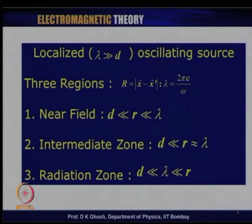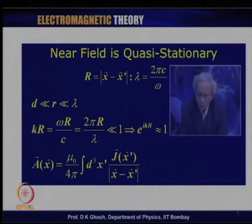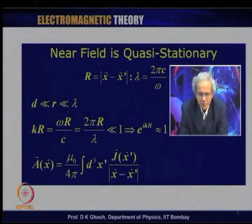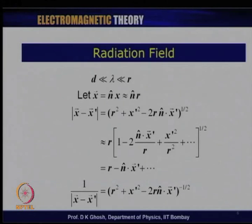Our main interest is on the radiation zone, where the dimensions of the source are much less than the wavelength, which in turn is much less than the distances at which we make our observation. The near field is quasi-stationary: other than the time variation like e to the power i omega t, the solutions are the same as for static sources or steady currents. We are interested primarily in the radiation field, for which d is much less than lambda, which is much less than r — so r is the largest scale in the problem.